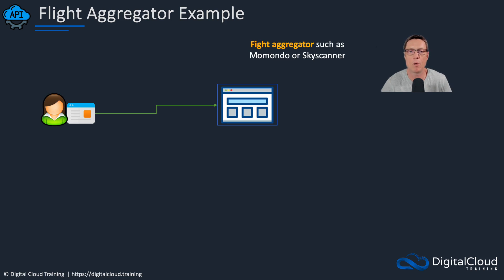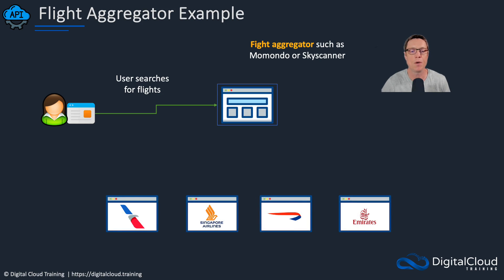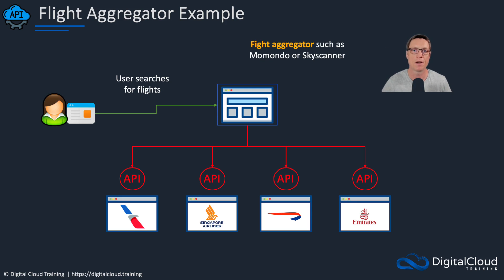Here's another example you may be familiar with: a flight aggregator service, like Skyscanner or Momondo. You might want to fly from New York to Dallas, so you put in your source, destination, time, and date. The aggregator goes out to the various airlines to find flights that suit your needs. Each airline has an API, so the flight aggregator issues a request with the search criteria, the API returns the results, and you as the purchaser can then choose which flight makes sense.